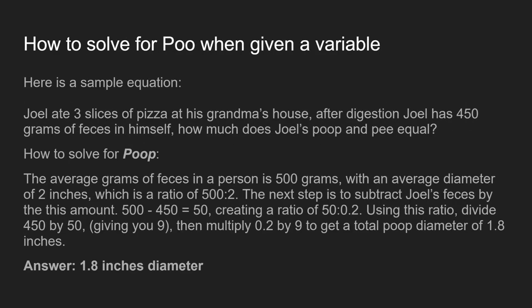Just a quick review — write this down. 500 grams is the average, and 2 inches of diameter is the average for poop. All you have to do is subtract the first part by the person's feces amount, then equal out the ratio, divide by the first number, and then multiply the diameter. I know it sounds complicated, but you guys will get the hang of it.